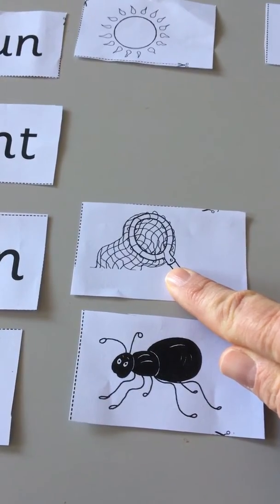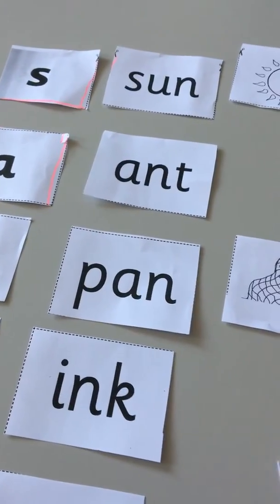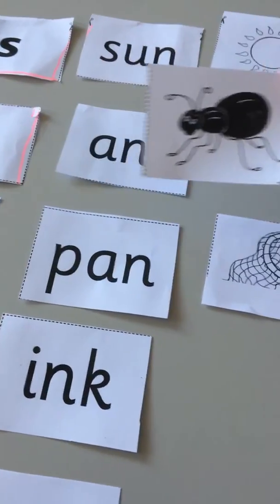No, what is this? This is a net. Ah, here's the ant. So we're gonna go put this back up with ant.